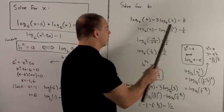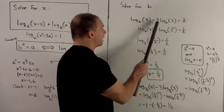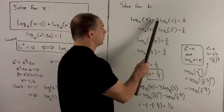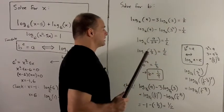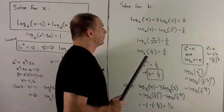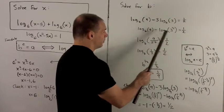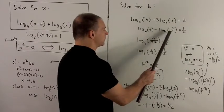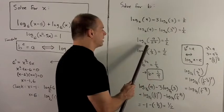So my equation, if I have a 3 out in front, the rule says for a log, we can move the 3 to the inside as an exponent. And then with this here, I'm allowed to take a difference of logs and rewrite that as a quotient.